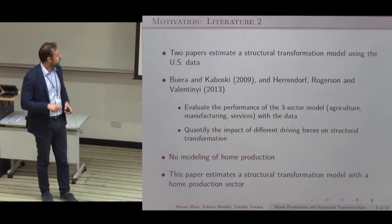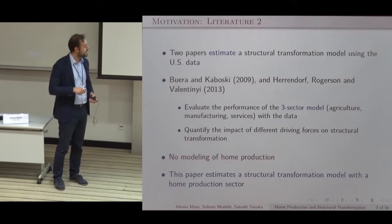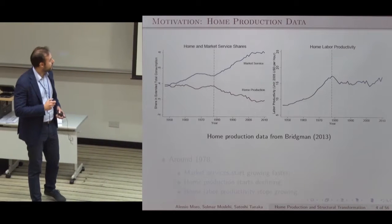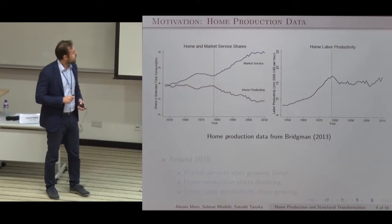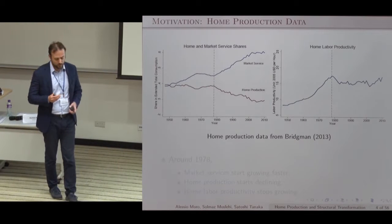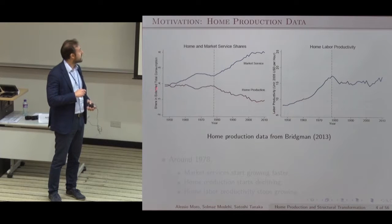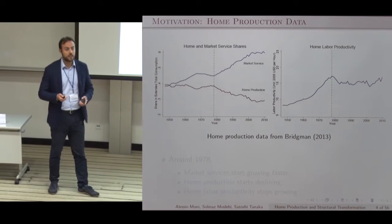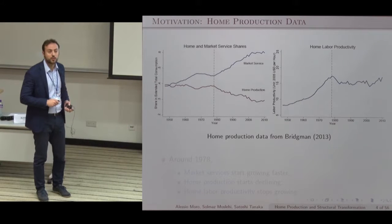What we want to do in this paper is to fill this gap and estimate a structural transformation model with home production. Let me give you some more motivation. What I report here is three time series. In the left panel, you have the share of market services in what we call extended total consumption — market consumption plus home production — where home production data are taken from Bridgman (2013).